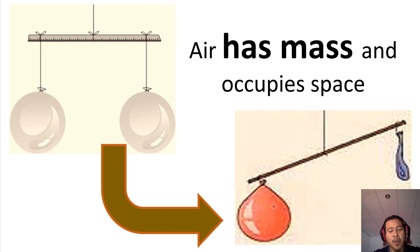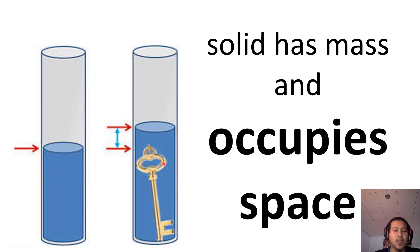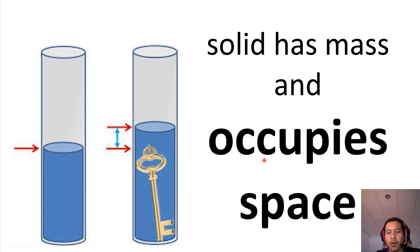Udara ni adalah jirim. Bila kamu masukkan udara, balon ni akan berkembang sebab dia memenuhi ruang, dan juga dia mempunyai jisim. Kita nak buktikan solid has mass and occupy space. Kamu ambil satu bekas, isikan air pada paras tertentu. Bila kamu masukkan contohnya kunci — kunci adalah solid, pepejal — kamu dapati bahawa air meningkat. Kenapa air meningkat? Sebab kunci ni memenuhi ruang, ataupun dia occupy space.